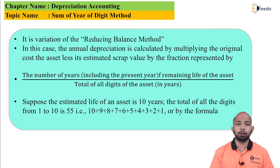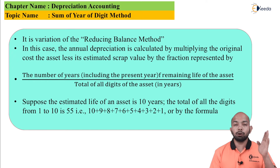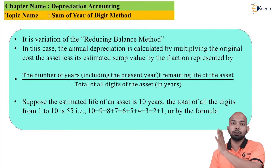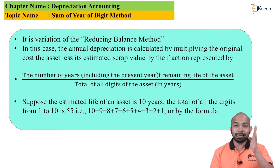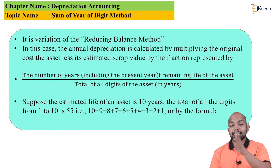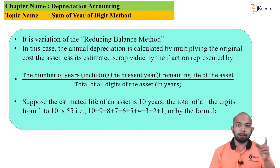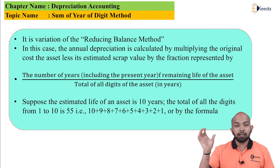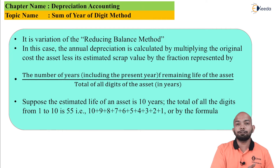Whenever you solve this problem, make sure you write down all the years in descending order. For example, if the estimated life is 7 years, you start with 7, 6, 5, 4, 3, 2, 1. If it is 10 years, then 10, 9, 8, 7, 6, 5, 4, 3, 2, 1 — divided by the total denominator, which is the sum of all these digits. So for the first year it will be 10/55, for the second year 9/55, for the third year 8/55, and so on. You multiply X minus Y by this fraction to get the depreciation amount.